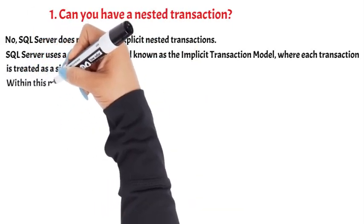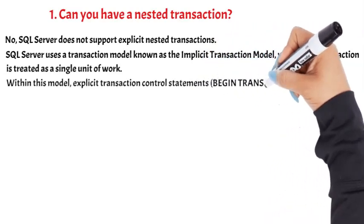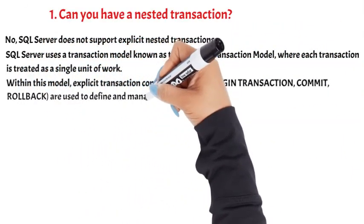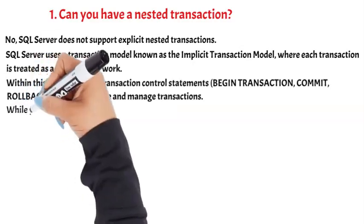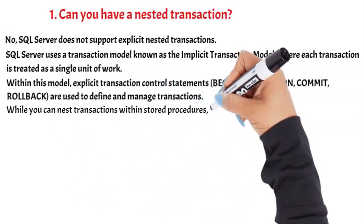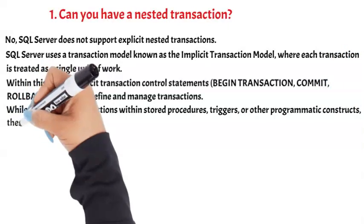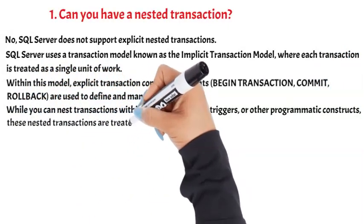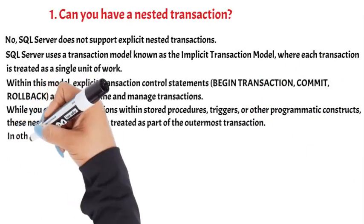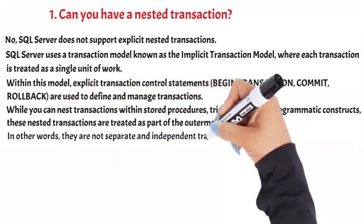Within this model, explicit transaction control statements — BEGIN TRANSACTION, COMMIT, ROLLBACK — are used to define and manage transactions. While you can nest transactions within stored procedures, triggers, or other programmatic constructs, these nested transactions are treated as part of the outermost transaction. In other words, they are not separate and independent transactions.